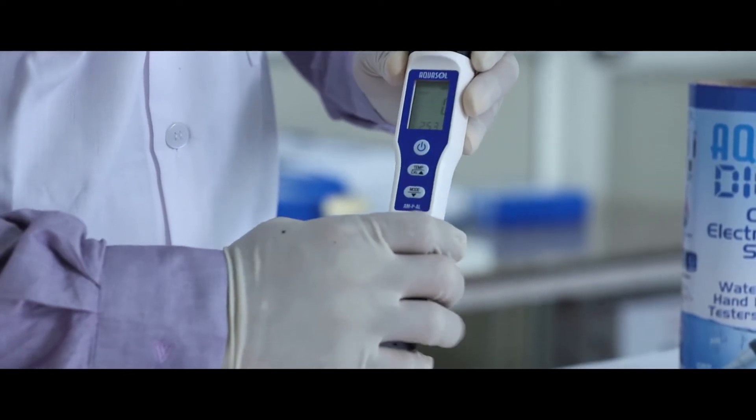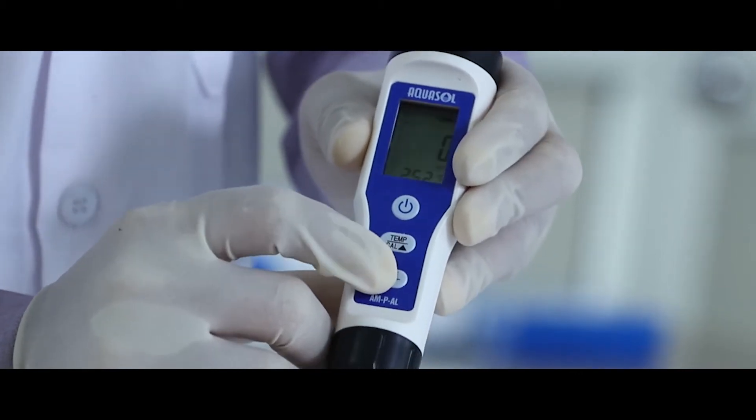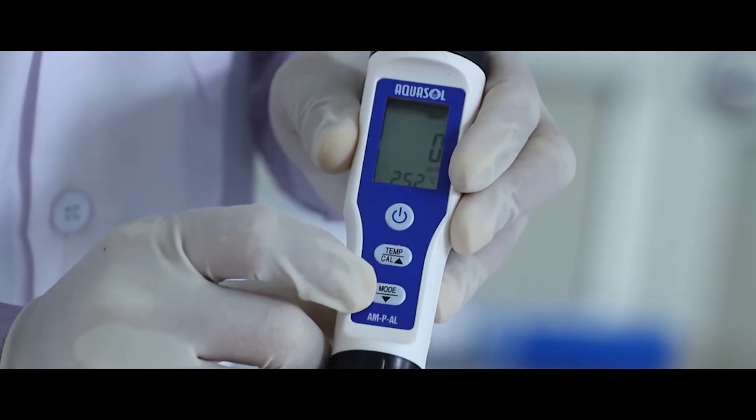Press power button to switch on the meter. Press mode key to change the modes from pH, conductivity and TDS.